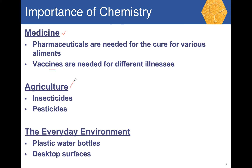In agriculture, chemistry is important because insecticides and pesticides are all chemistry in action. If you look around your environment, you'll likely see your computer, various other things, maybe a bottle of water — that's all chemistry in action. The bottle is made of plastic, which is a polymer. Most surfaces for desks and tables are in fact polymers. Chemistry is an important aspect of our everyday lives.